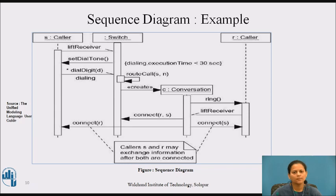This diagram does not indicate what happens if this time constraint is violated. For that, you could include a branch or a completely separate sequence diagram. The switch object then calls itself with the message route call. It then creates a conversation object C to which it delegates the rest of the work.